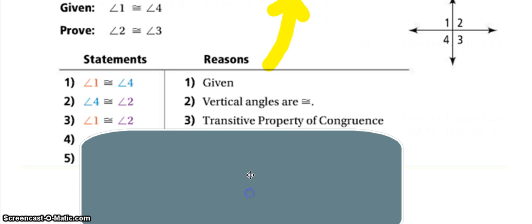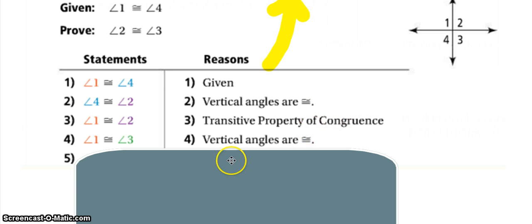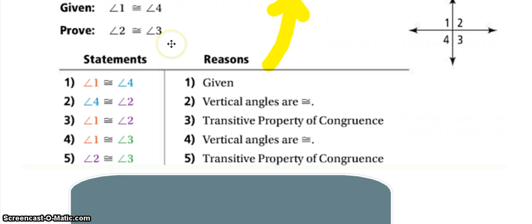After that, we start again by saying that angle one is congruent to angle three because they're vertical angles — looking at the next vertical angle pair. You can use the same reason multiple times, so don't worry about doing that. Then we do the same thing again with the transitive property to show two being congruent to three, and that is exactly what we were trying to prove.